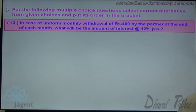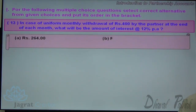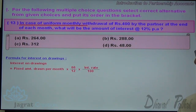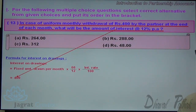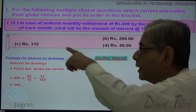Next. In case of uniform monthly withdrawals of rupees 400 by a partner at the end of each month, what will be the amount of interest at the rate of 12% per annum? The uniform amount withdrawn is 400 at the end of each month. Using the formula with 66 months at 12%, the interest amounts to 264. Option A is the correct answer.